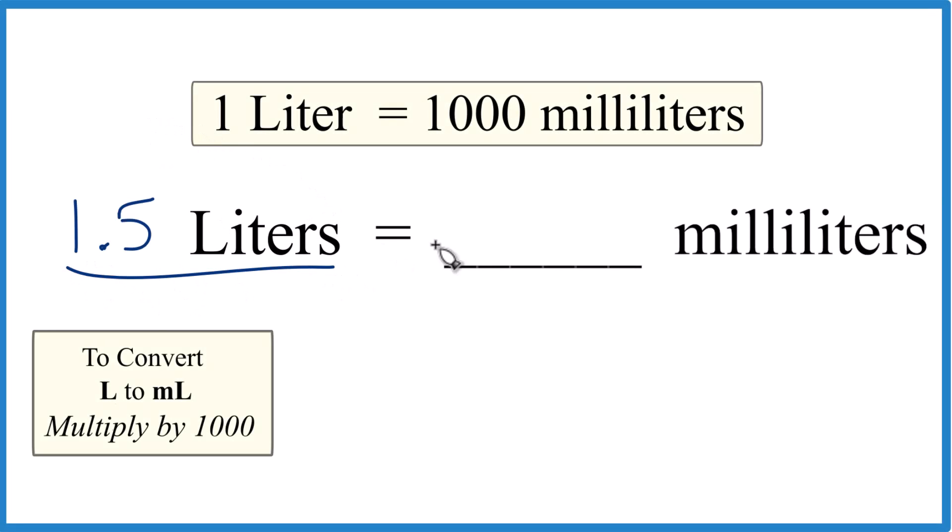So let's convert 1.5 liters to milliliters. Here's how you do it. We know that one liter is a thousand milliliters.